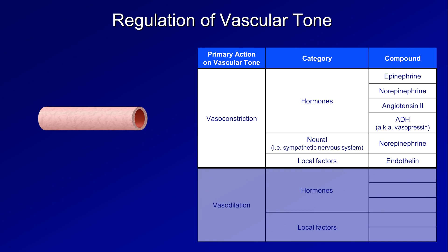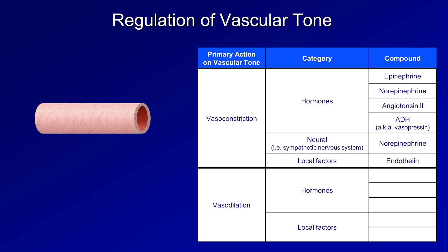Other compounds cause vasodilation. Hormones doing this include ANP and BNP, bradykinin, and histamine. Local factors include nitric oxide and adenosine. This isn't a physiology lecture, so I'm not going to review this process in great detail, but will just focus on the compounds most relevant to the treatment of shock.